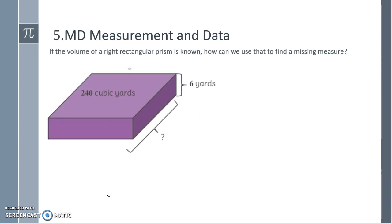If the volume of the right rectangular prism is known, how can we use that to find a missing measure? So I know the volume is 240 cubic yards. I know that I have six layers of equal amounts. I can then take volume, which is area of base times height, and we know the volume is 240. We're unsure what the base is, but we know that there are six layers. So using our properties of multiplication and division, I can take 240 divided by six layers, so each layer is 40 square yards.